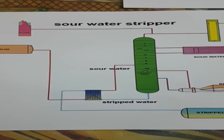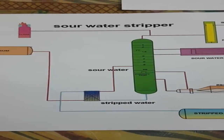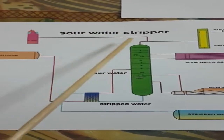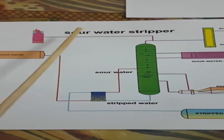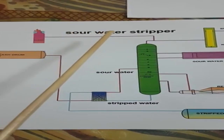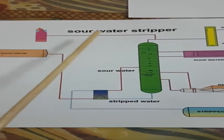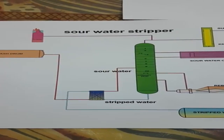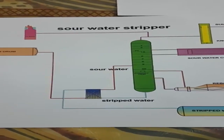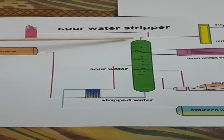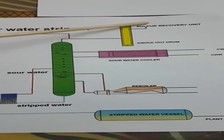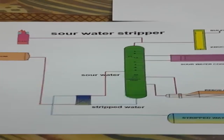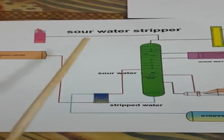Hello guys, welcome to my channel Chemical Dairy. In this video I'm going to teach you about the sour water stripper. This is one of the important units in petrochemical and petroleum industry, important for removal of hydrogen sulfide. It is also one of the important topics for jobs — you may have seen many postings for sour water stripper, amine regeneration unit, and sulfur recovery unit.